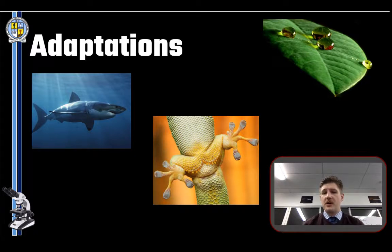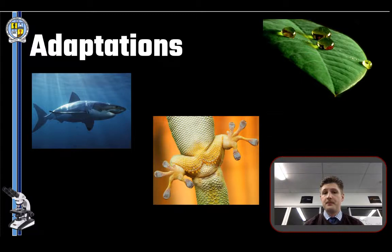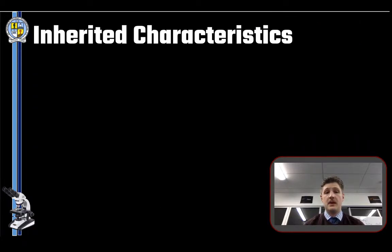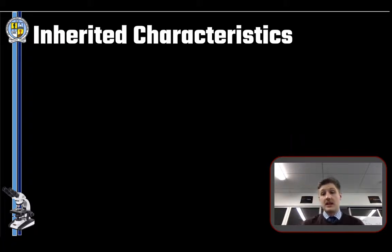Every living thing on Earth is perfectly adapted to survive in its natural environment. They have the features that help them to survive and be successful — these are the adaptations we're talking about. If an environment changes, only the strongest will survive, and it's the changing of environments that is also extremely key to adaptations and passing on your genetic material.